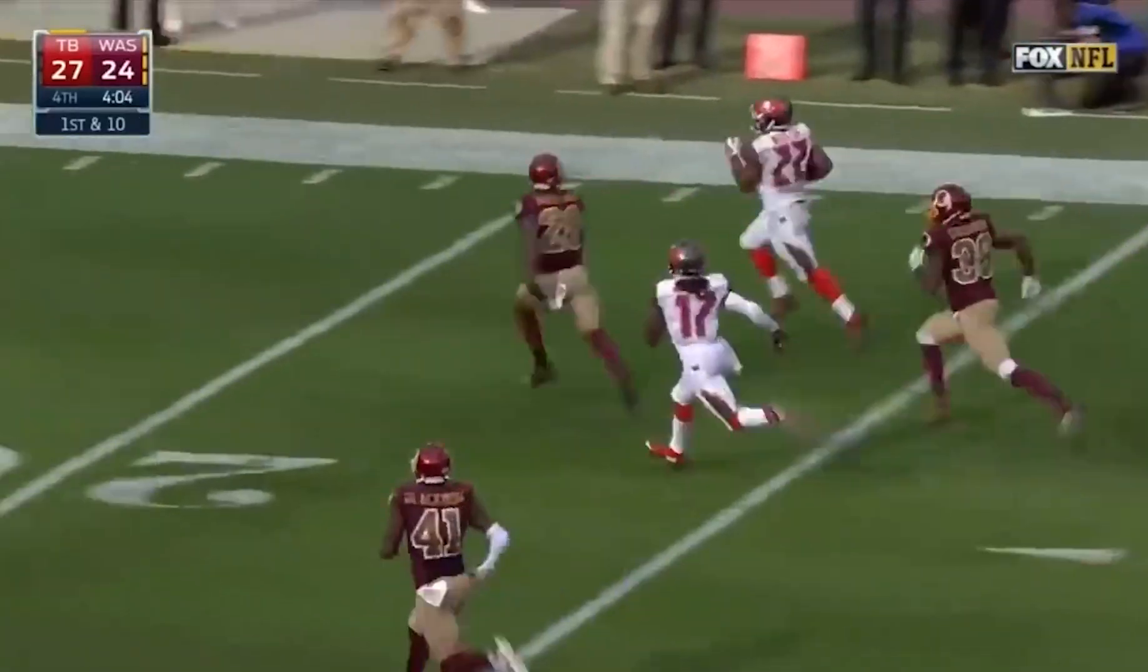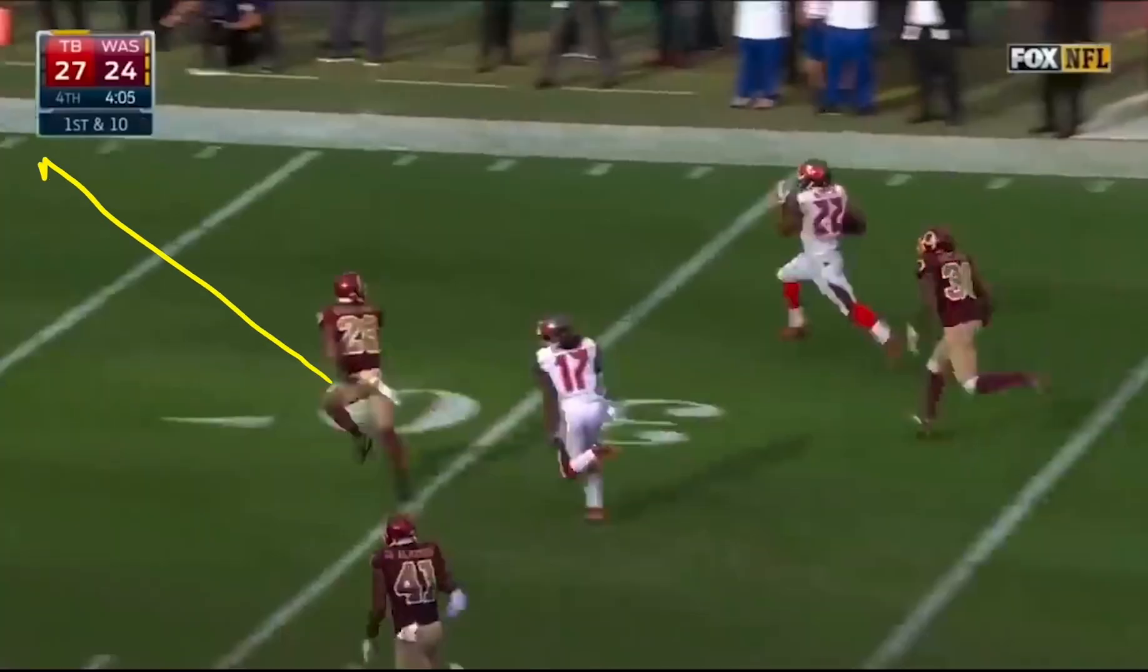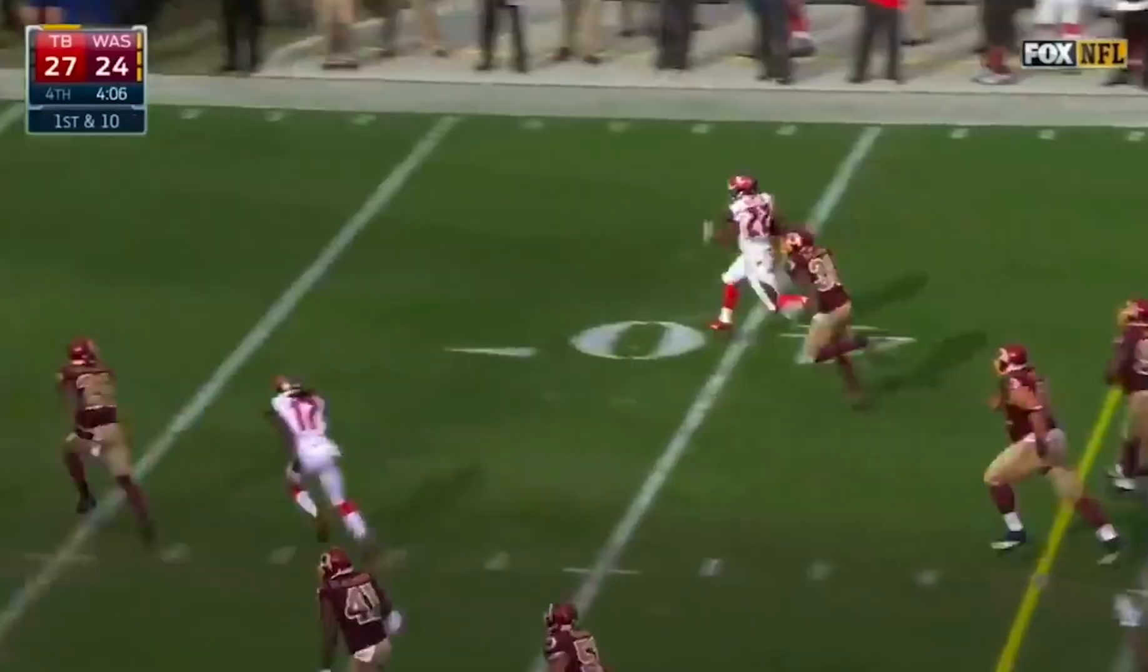A defensive back pursuing a ball carrier needs to pick an angle for the pursuit. How can they know which angle to take, and is there a way to know if they're on track to make the tackle during the pursuit? If they aren't on track, what adjustments do they need to make to still be successful?